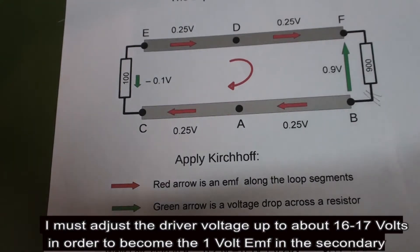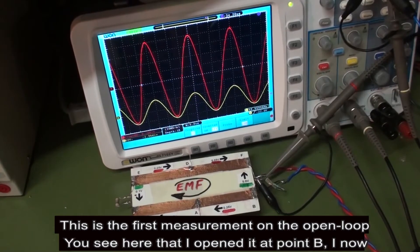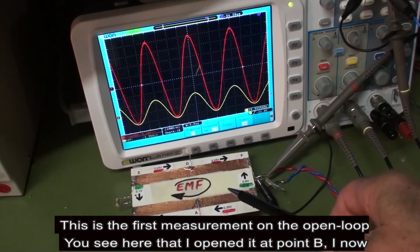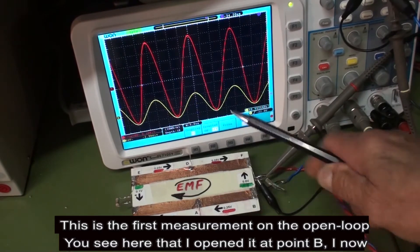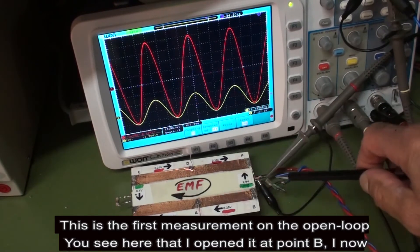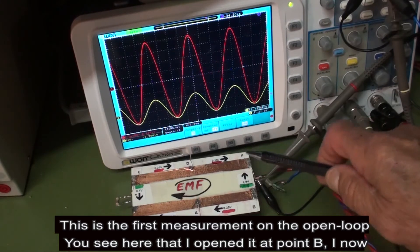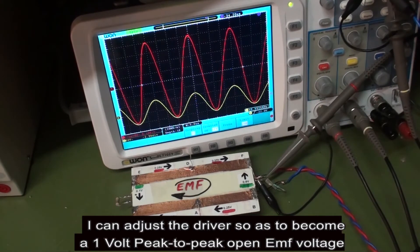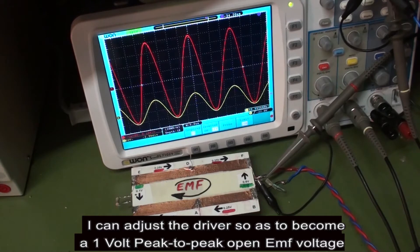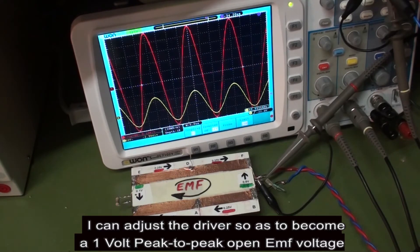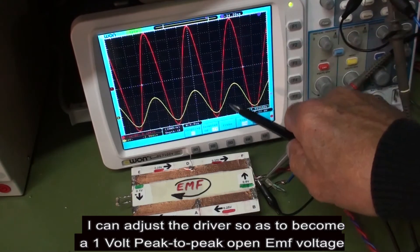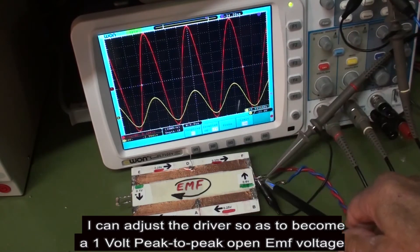I must adjust the driver voltage up to about 16-17 volts in order to get the desired 1 volt EMF in the secondary loop. This is the first measurement on the open loop. You see here that I open it on point B, and now I can adjust the driver so as to get a 1 volt peak-to-peak open EMF voltage.